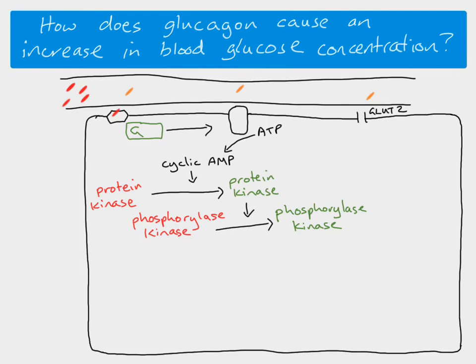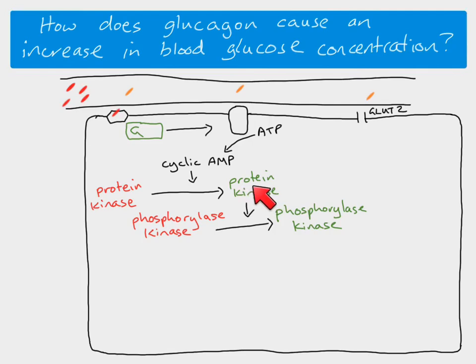Because we're talking about enzymes, the activated protein kinase isn't just acting on one phosphorylase kinase molecule — it acts on many many molecules. Even a single molecule causes lots of protein kinase molecules to be activated, which in turn causes even more phosphorylase kinase molecules to be activated. What we get is an amplification at each step, so more and more molecules become activated as we go down. This is called a cascade.